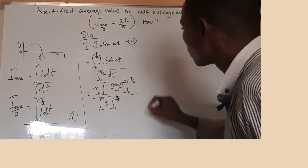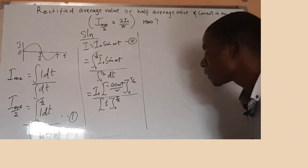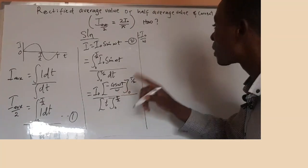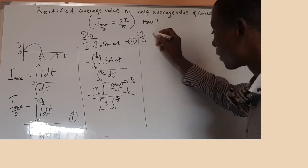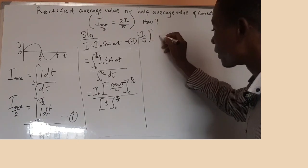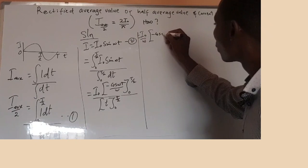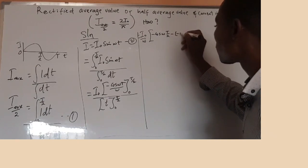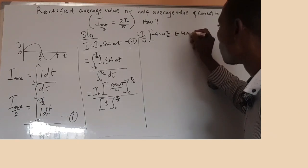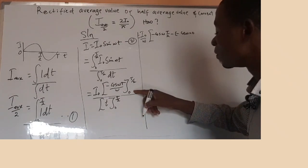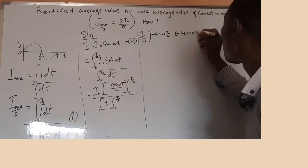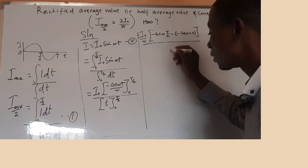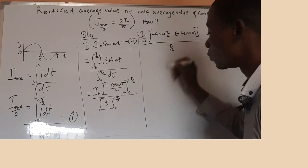From there we start substituting our limits. We will have I₀ over ω, then open bracket: minus cos(ω × T/2) substituting the upper limit, minus cos(ω × 0) for the lower limit. Close bracket, all over: substituting the upper limit gives T over two, and substituting the lower limit zero gives zero, so the denominator is T over two.